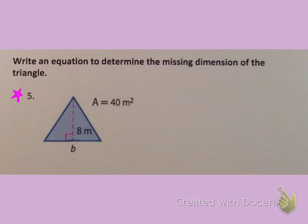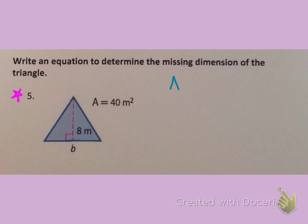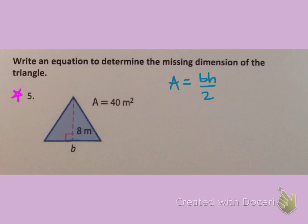Write an equation to determine the missing dimension of the triangle. As always, the first thing we need to do is write the formula. For these problems where we have the area and one of the dimensions, it's usually easier to use the formula A equals base times height divided by 2. Now that I've gotten you started with the formula, I'm going to ask you to solve the problem on your own and we will check in class with our groups.